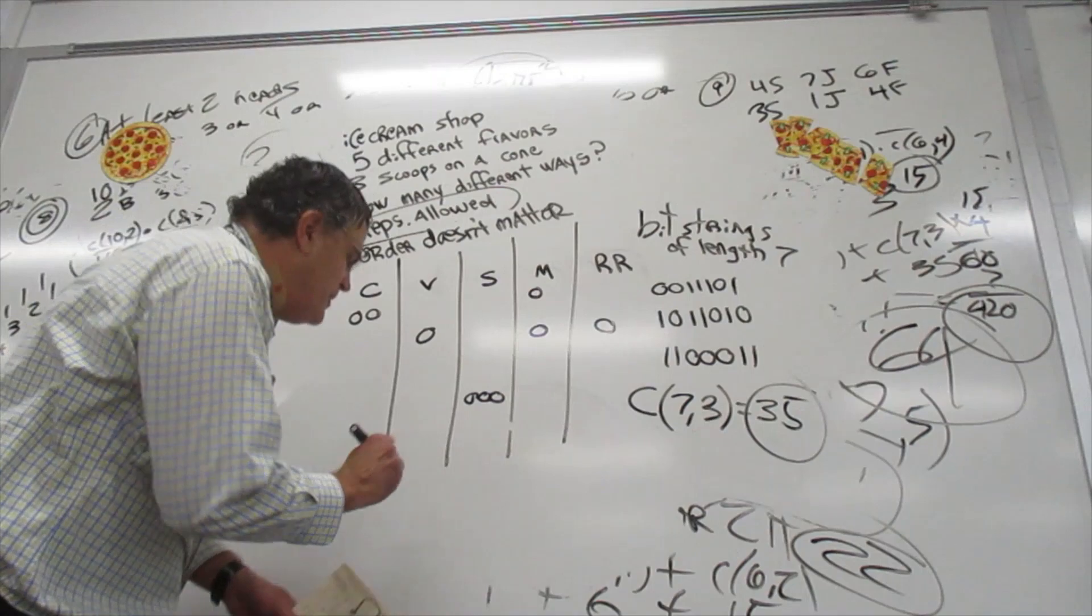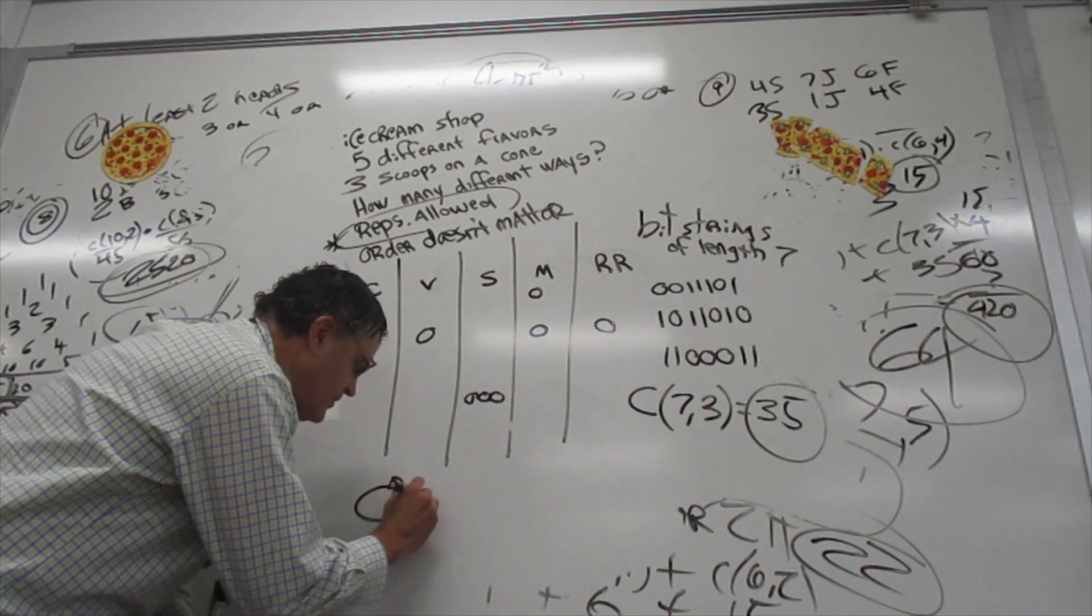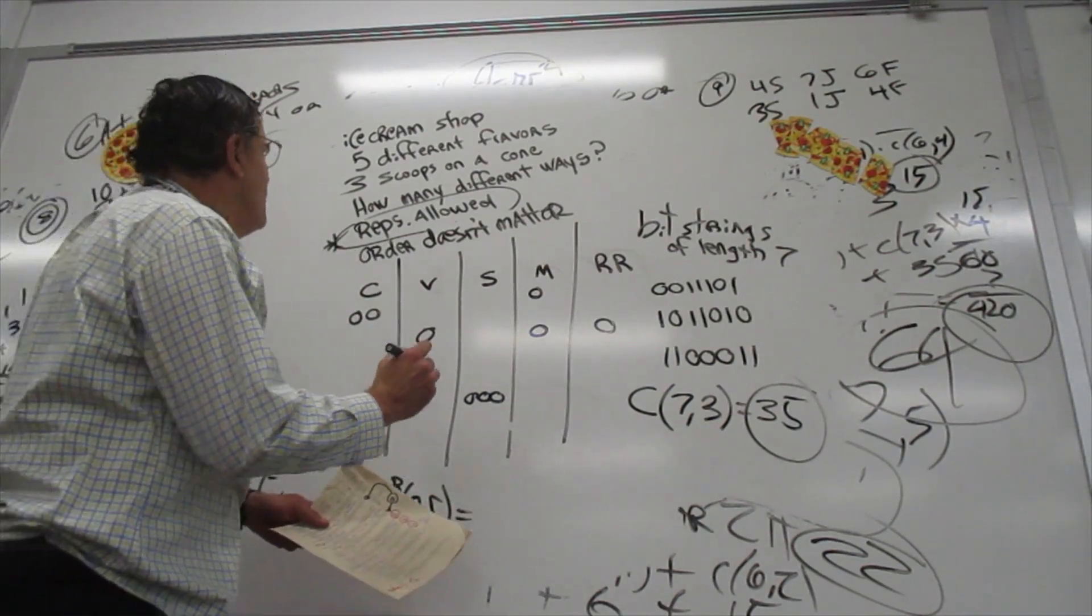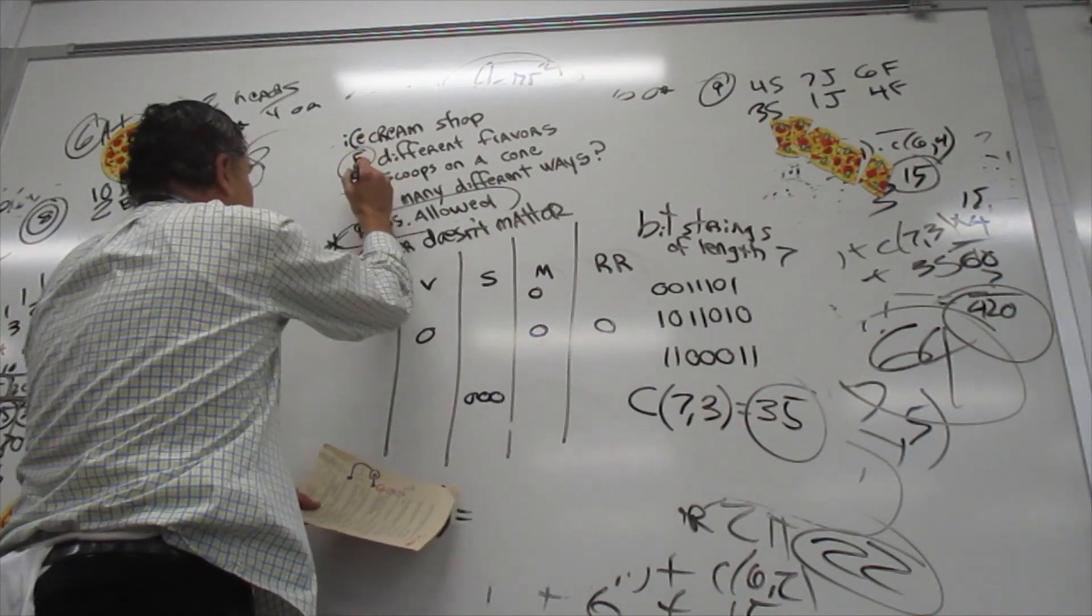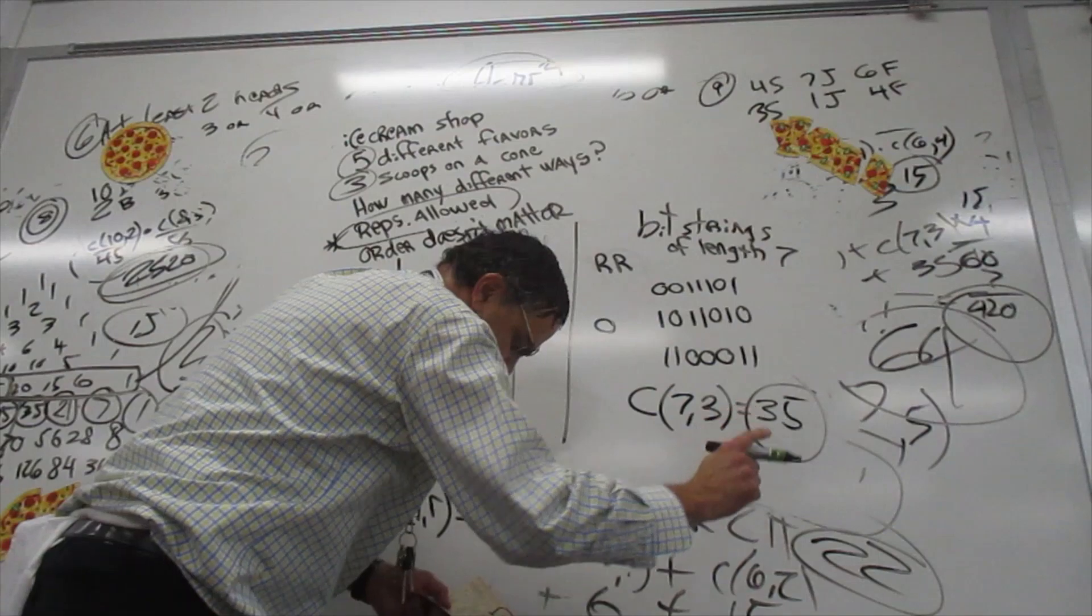So there is a formula for combinations n choose r where reps are allowed. And look at this. We had five different flavors. It wasn't 5 choose 3, but it was actually 7 choose 3.